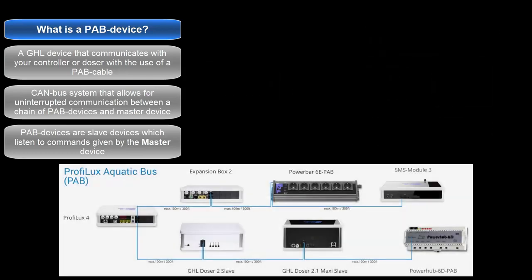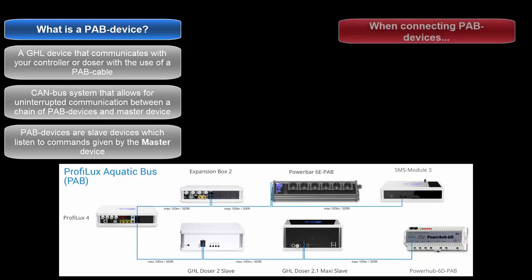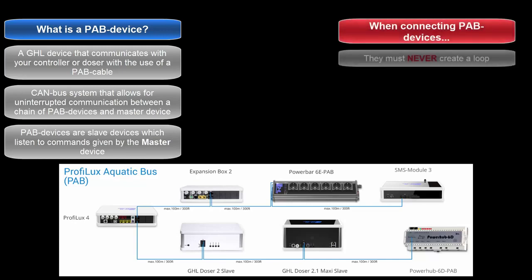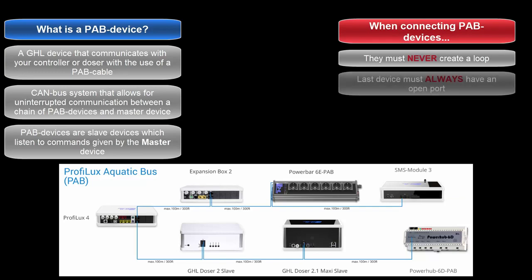Here's a quick example of what a connected PAB system looks like. As you can see, PAB devices are daisy-chained off of another device. When connecting these devices, it's super important to make sure that the connected items never create a loop. That means the last PAB device must always have an open and unused PAB port.